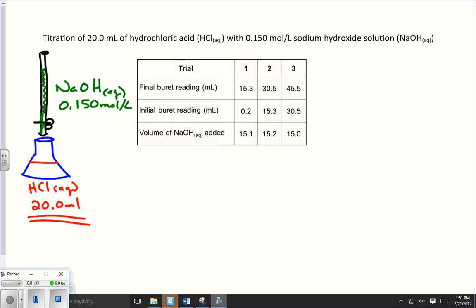We also know the volume, because the volume of the titrant is the volume of the sodium hydroxide that is added, that's recorded in this table. So in the first trial, we started with the initial burette reading, initial burette reading up here, of 0.2 milliliters. And we finished somewhere down here, at 15.3 milliliters. So we know that 15.1 milliliters was added in our first trial.